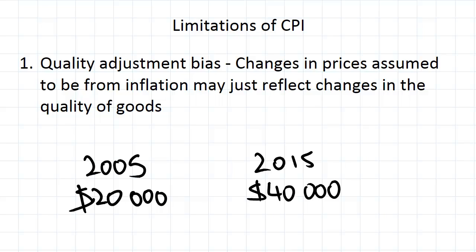But would we really say that purchasing power has halved from 2005 to 2015? It's true that with $40,000 in 2005 you could buy two cars. In 2015 you can buy one car.